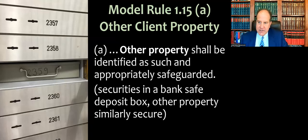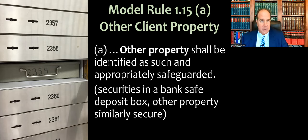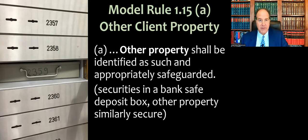Other property shall be identified as such and appropriately safeguarded. The comments give the example that securities should be kept in a bank safe deposit box. Other property should be similarly secure — if it wouldn't fit in one of those safe deposit box drawers, maybe your firm should have a safe or a vault. If the client entrusts you with a vehicle or some large object, you should have a secure storage garage where it's kept, and you can pass those costs through to the client.